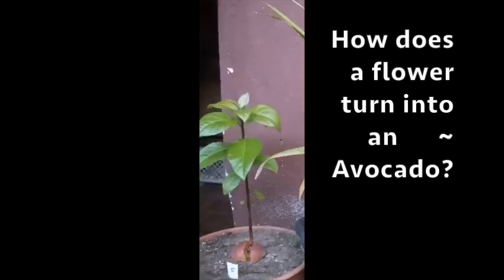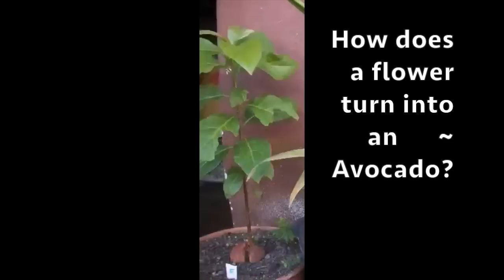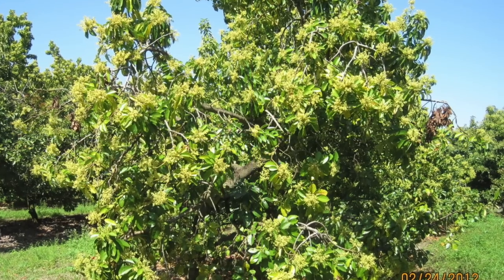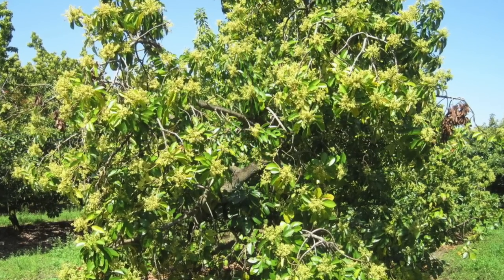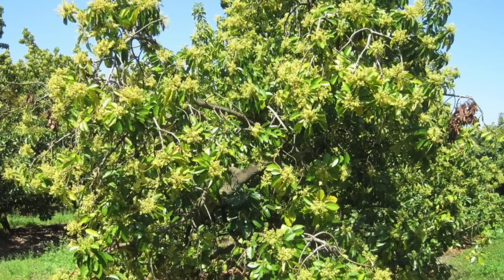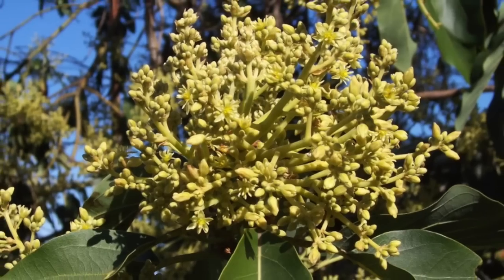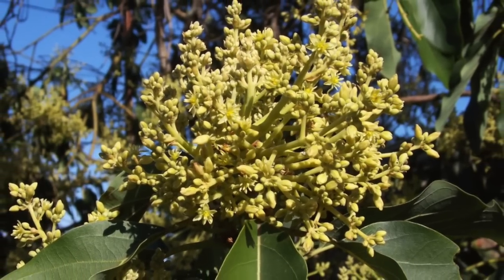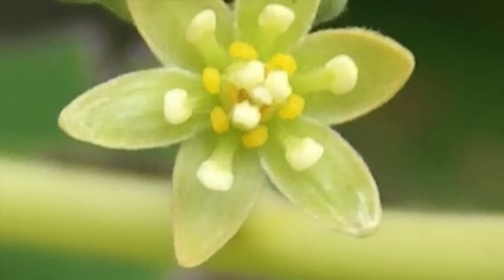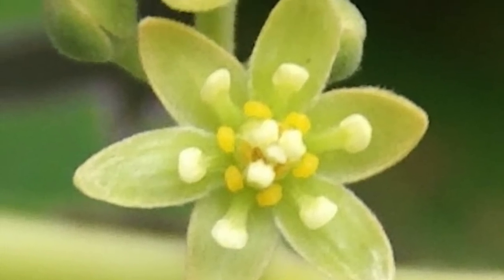How does a flower turn into an avocado? Here is an avocado tree in full flower. You will notice that there are clumps of flowers like this, and each clump is made up of hundreds of individual flowers.